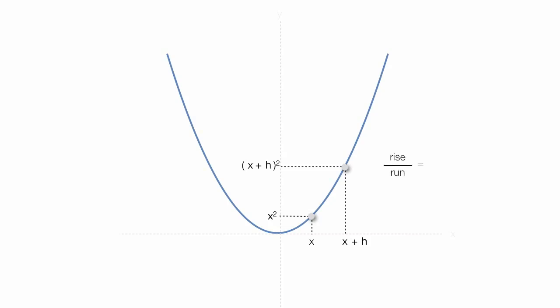So now, I have the rise over the run as my slope, which is that distance. So the rise is x plus h squared, minus x squared.